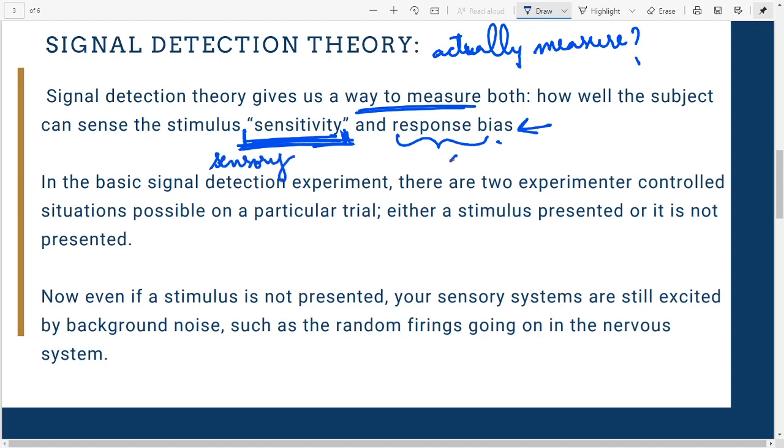I am biased toward responding in a certain way because of my previous experience or motivation. I might say it's an ice cream truck even when it's not because I am biased toward this particular stimulus in the environment. I want to see it more, therefore I will say it is present more.